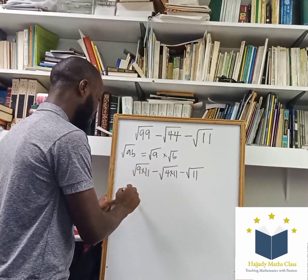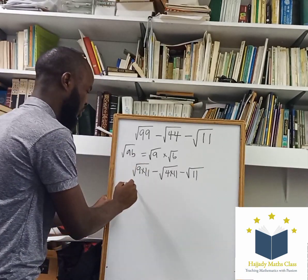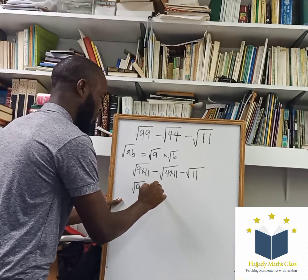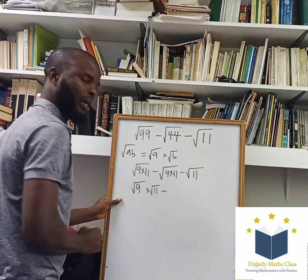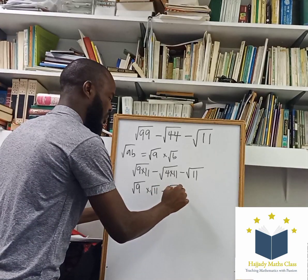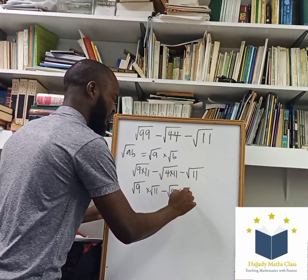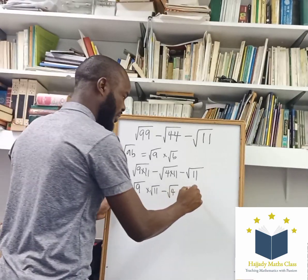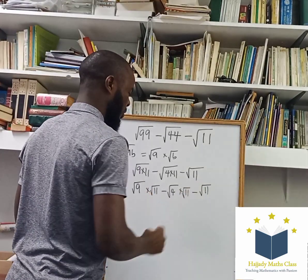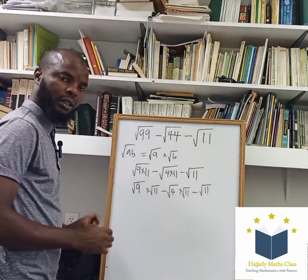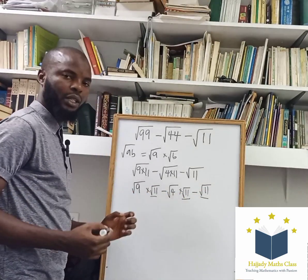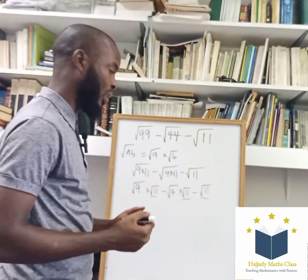Using this rule, this can be written as square root of 9 multiplied by square root of 11, minus square root of 4 multiplied by square root of 11, minus square root of 11. Looking at this, we have root 11 in every term, which shows that root 11 can be factored out.